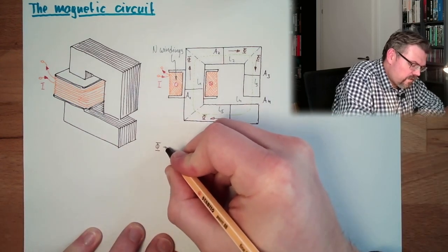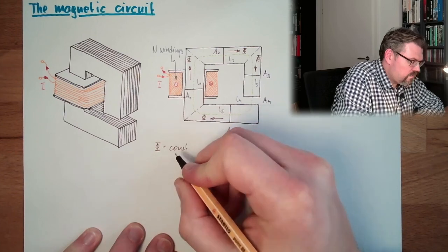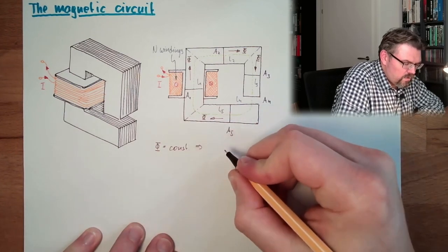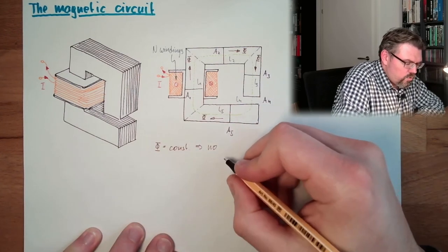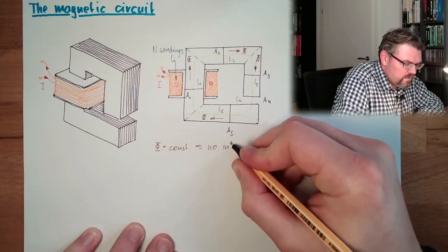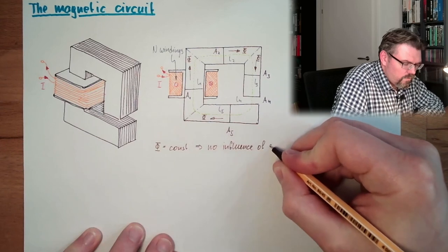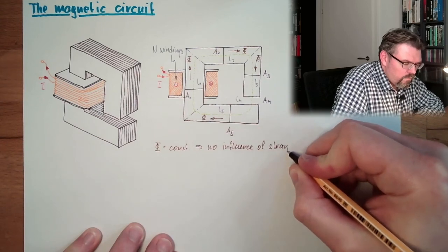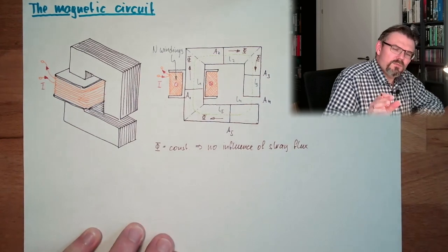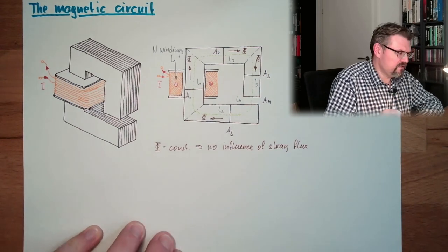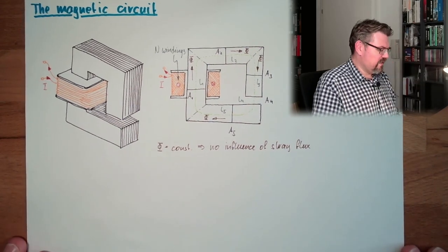So everywhere is the same magnetic flux. I'll write this here down. Phi is constant. So no influence of stray flux. The stray flux is not taken into account.